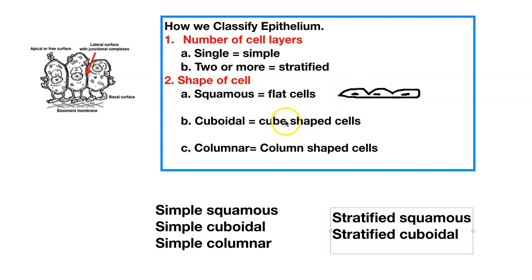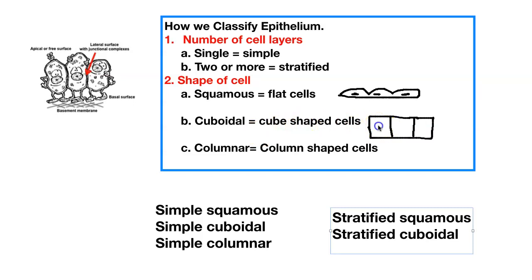Now cuboidal — these are going to be cube-shaped. I'm going to try to draw three cube-shaped cells. The nucleus is centered and it's nice and round. So your cuboidal cells have a nucleus in the center that is nice and round.